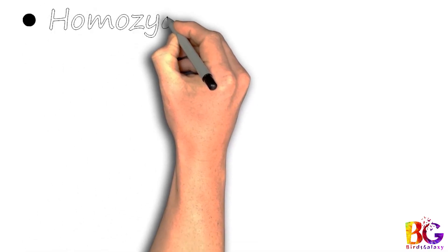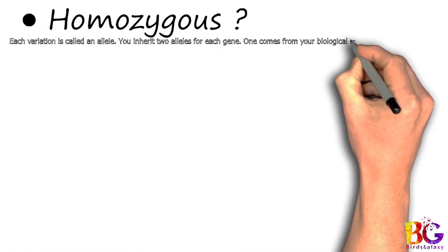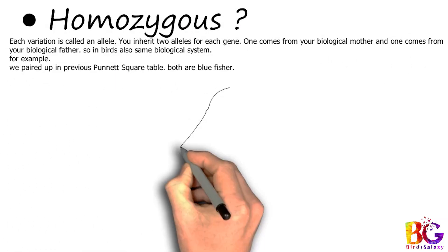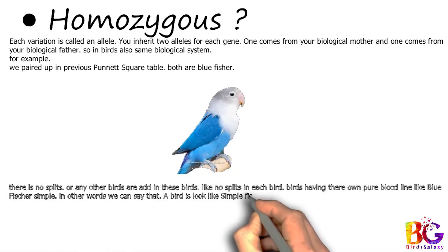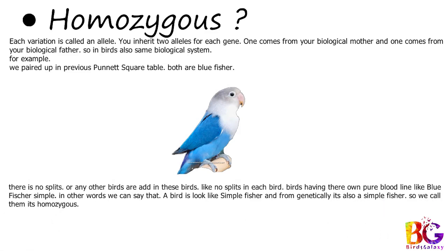Our next topic is homozygous and heterozygous. What is homozygous? Each variation is called an allele. You inherit 2 alleles for each gene — one comes from your biological mother and one from your biological father. In birds the same biological system applies. For example, in the previous Punnett Square table both birds were bluefisher — there are no splits or any other birds added. Birds having their own pure bloodline, like simple bluefisher. In other words, a bird that looks like a simple fisher and genetically is also a simple fisher — we call that homozygous.